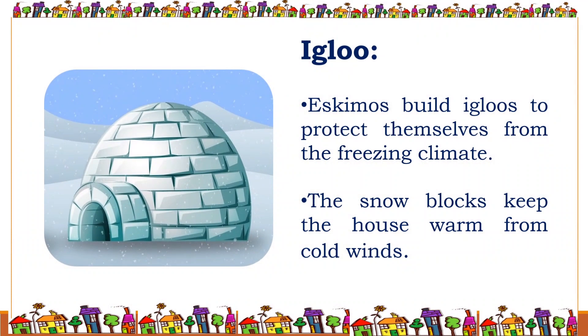Next, in kacha houses let us see about the igloo. Eskimos build igloos to protect themselves from the freezing climate. The snow blocks keep the house warm from cold winds.